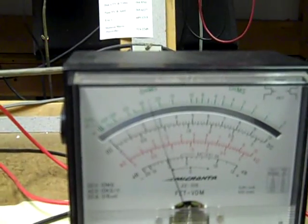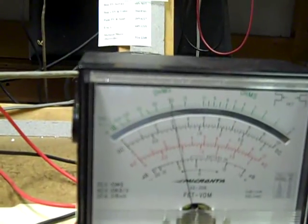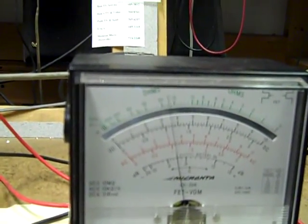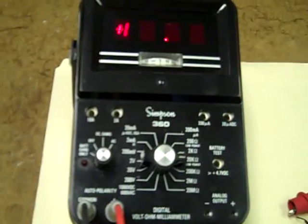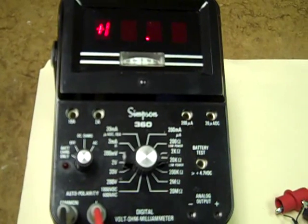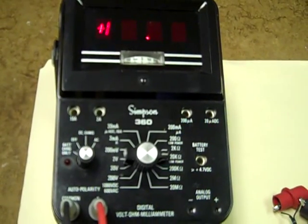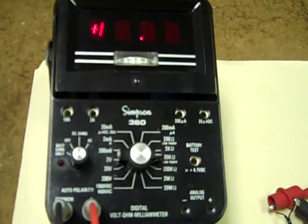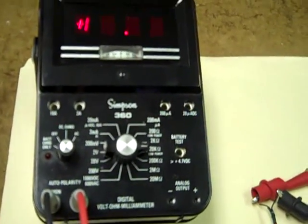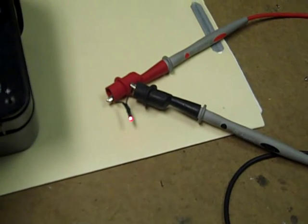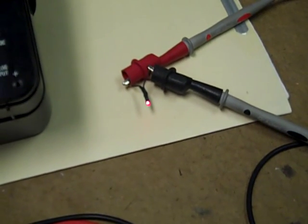And one other function, not documented in its owner's manual—the 2,000 ohm resistance range also functions as a diode check, just like a newer multimeter. And it'll even light an LED. How about that?